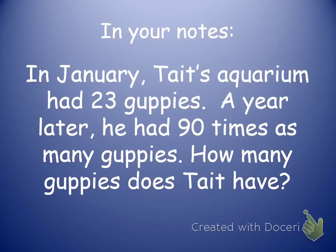Go ahead and write this problem down in your notes. In January, Tate's aquarium had 23 guppies. A year later, he had 90 times as many guppies. How many guppies does Tate have?